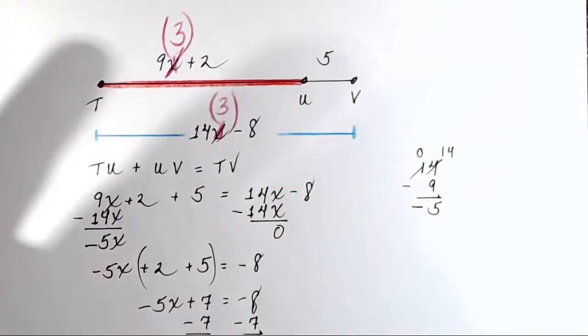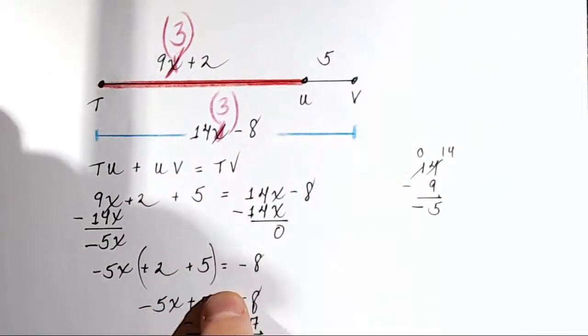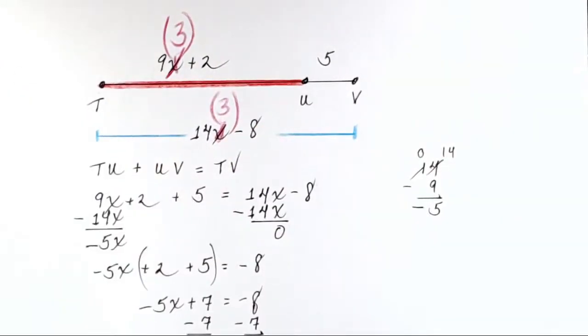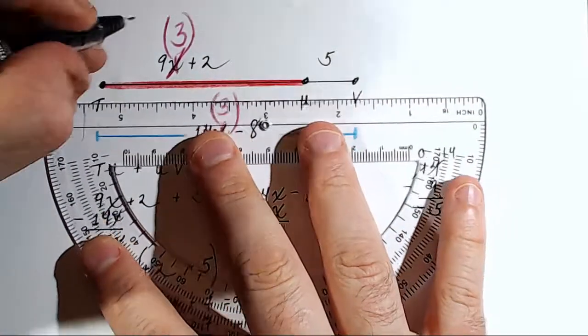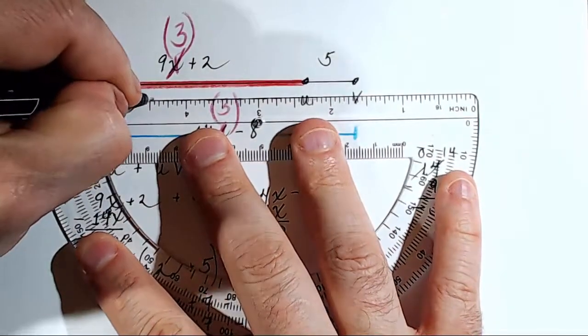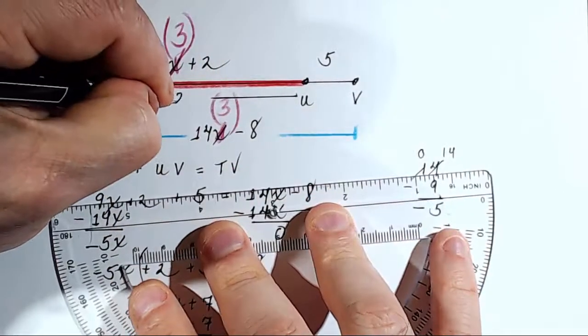I should be able to multiply 9 times 3 and add 2 and find distance TU. But I can't just do that and be done with the problem. I have to make sure it's right. So let's do it first. What is 9 times 3? 9 times 3 is 27. 27 plus 2 is 29.